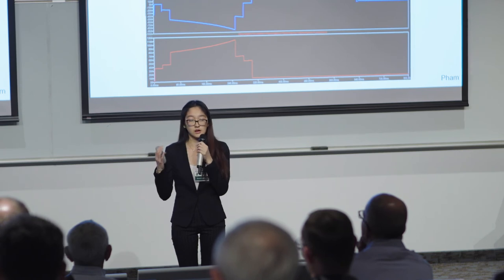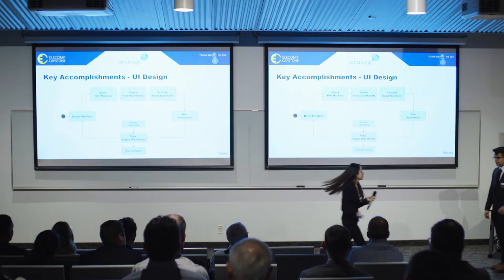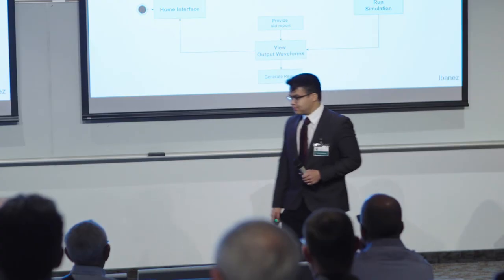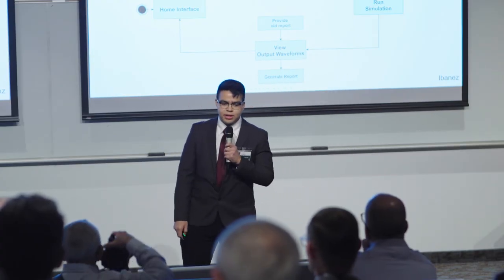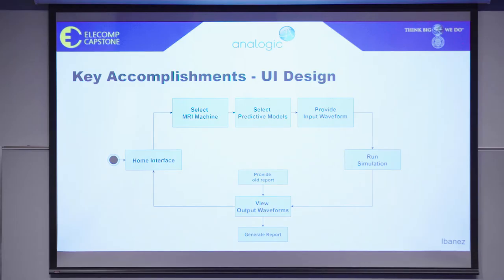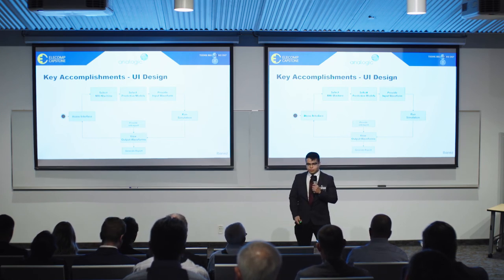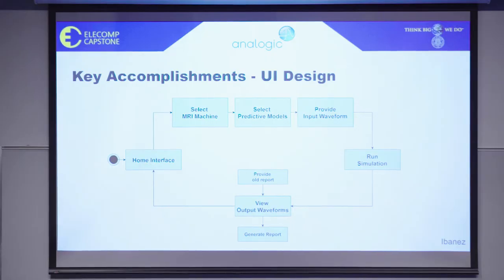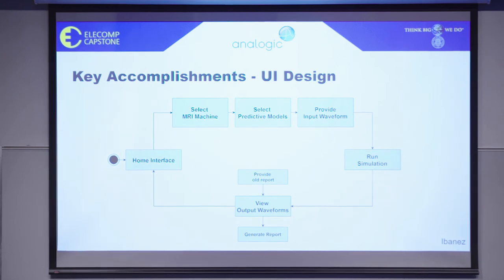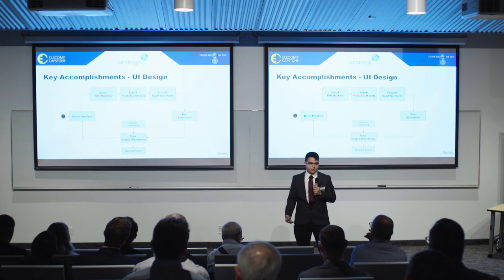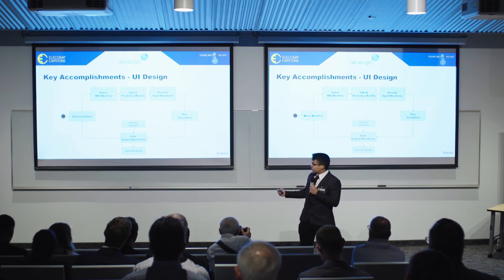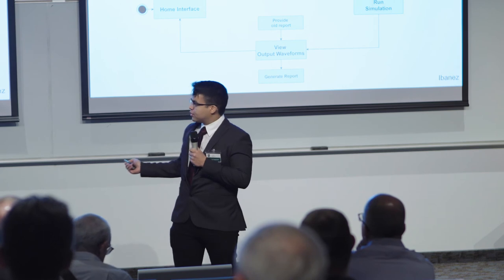Now that we've talked about the models, we can go into how this fits into the software. To begin software development, we narrowed down the user experience to figure out what steps we wanted users to take to get their results. We came up with a user flow: you start at the home interface, choose which MRI gradient amplifier to run the software on — currently just the AG700 — select which predictive models to use. If you're confident your input waveform won't exceed electrical or thermal thresholds, you can turn that model off to save time at a small cost to accuracy. Then you select the input waveform and settings, and run your simulation.